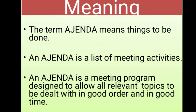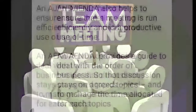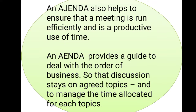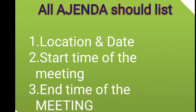So let's begin today's topic. The term 'agenda' means things to be done. An agenda is a list of meeting activities — a meeting program designed to allow all relevant topics to be dealt with in good order and in good time. An agenda helps to ensure that a meeting is run efficiently and is a productive use of time. It provides a guide to deal with the order of business so that discussion stays on track.